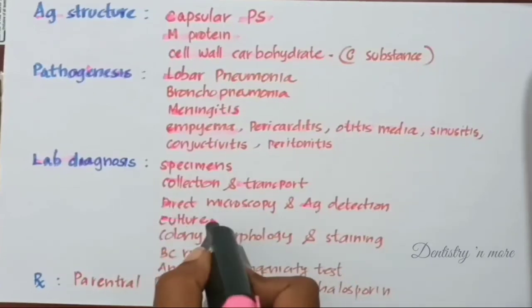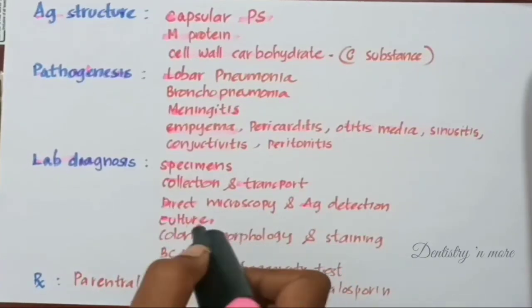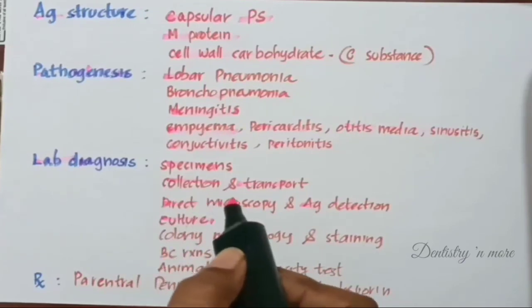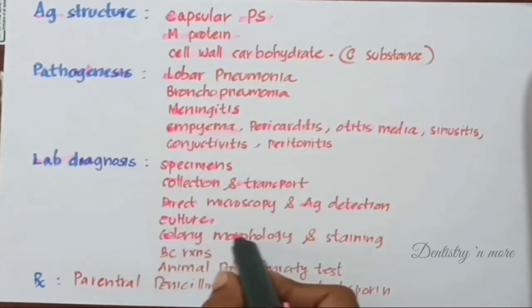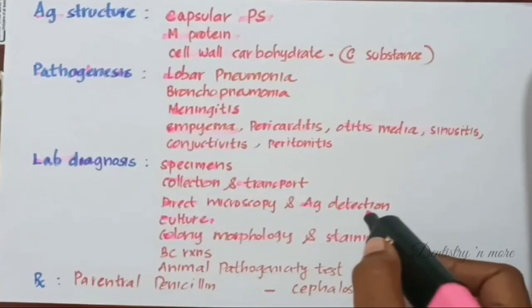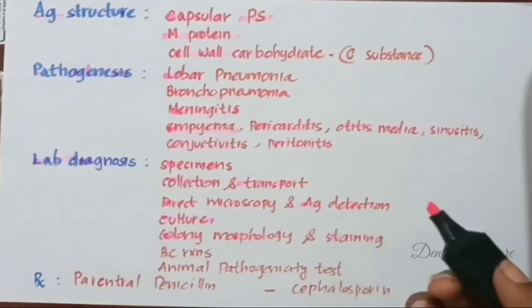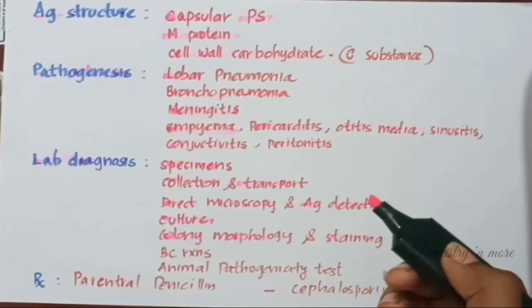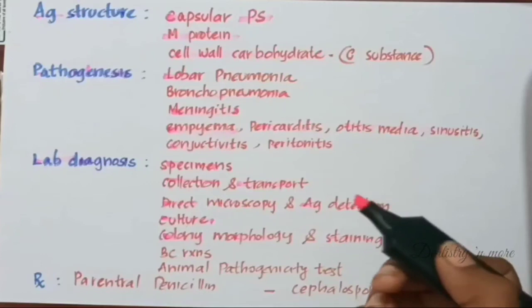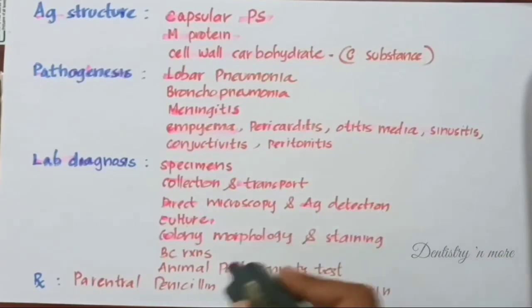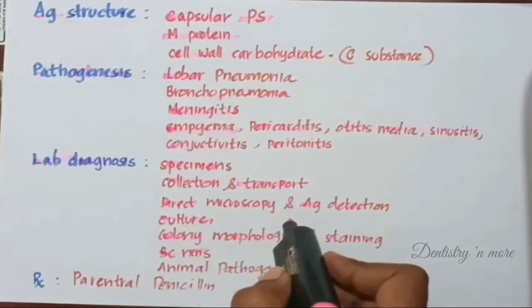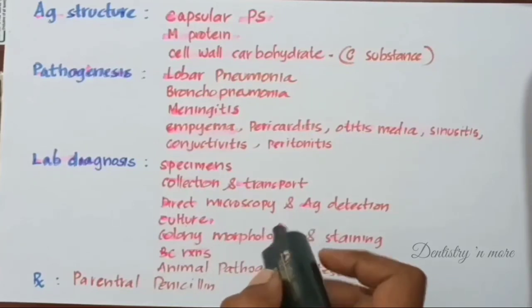For culture, the specimen is inoculated on blood agar and incubated at 37 degrees Celsius for 24 hours in the presence of 5–10% carbon dioxide. Colonies are usually small with alpha-hemolysis, showing a greenish discoloration around them. On prolonged incubation they show the draughtsman appearance as discussed earlier. Biochemically, they are bile-soluble and catalase-negative.